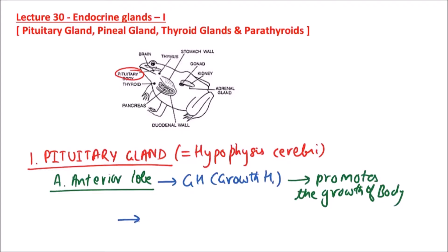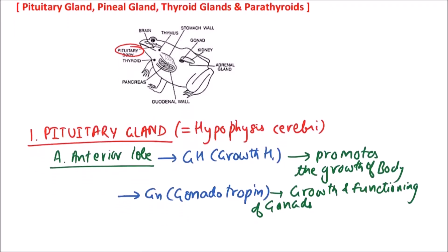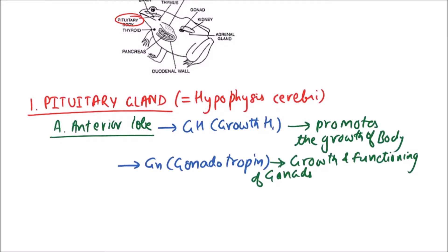The next hormone secreted from the anterior lobe is gonadotropin. Gonadotropins result in the growth and functioning of the gonads and are very important for maintaining reproductive functions.